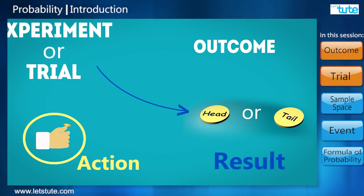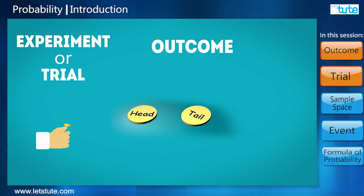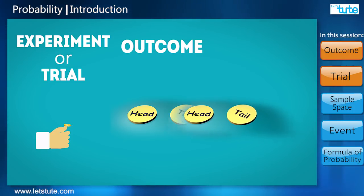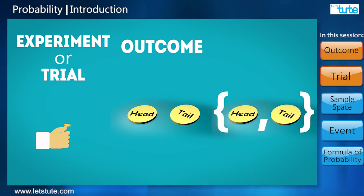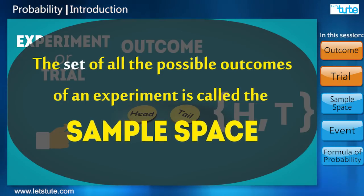If we collect all the outcomes of an experiment together, it will look like a set. We have already learned about sets in our previous grade. In the case of tossing of a coin, it would look like this. In probability, all the possible outcomes of an experiment is called the sample space.